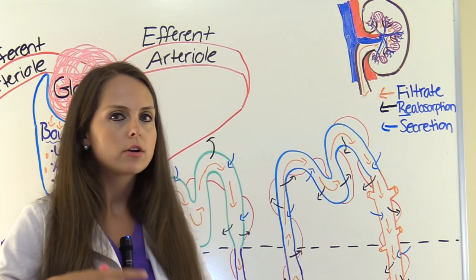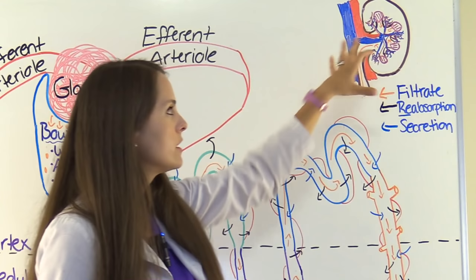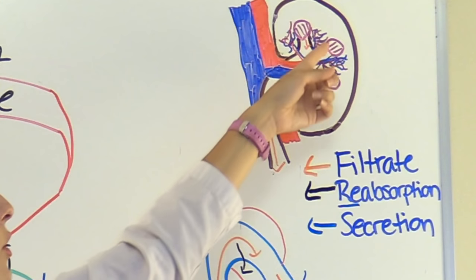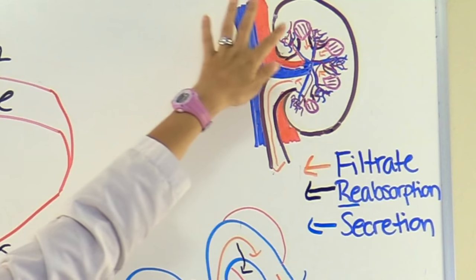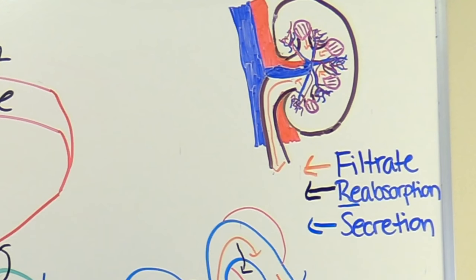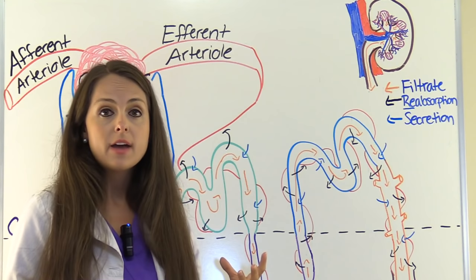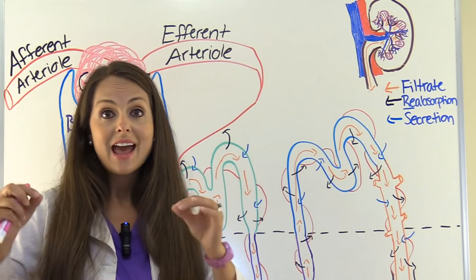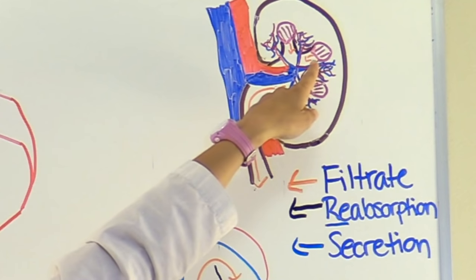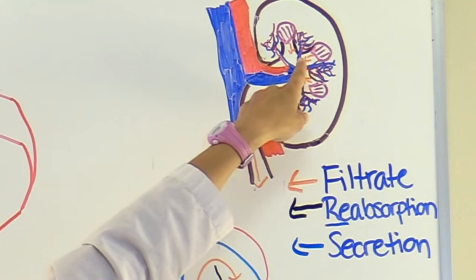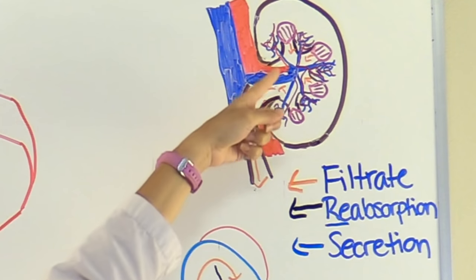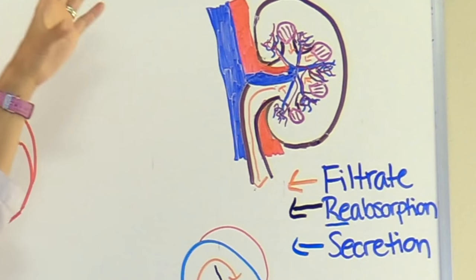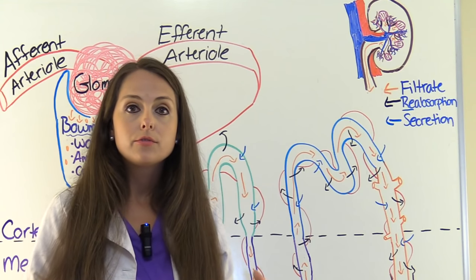The renal artery branches off into arterioles which go to those nephrons. Each kidney has millions of nephrons — part of the nephron sits in the cortex of the kidney and another part sits in the medulla. The nephron filters, reabsorbs, secretes, and then excretes urine. Urine flows out of the renal pyramid through the renal papilla, down through the minor and major calyx, through the renal pelvis, out through the ureters, stored in the bladder, and voided out through the urethra.